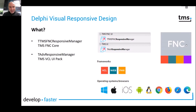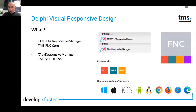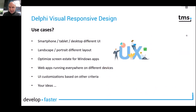The only difference is that with FNC, the TMS FNC Responsive Manager will work in classic VCL Windows applications. It will work on all the targets that the FireMonkey framework is supporting — Windows, macOS, iOS, Android, Linux — and FNC also supports web client application development with TMS WebCore. So from TMS WebCore, you can use the FNC Responsive Manager component. It's everywhere the same concept, the same mechanism, the same approach.